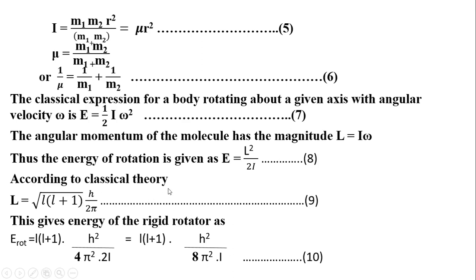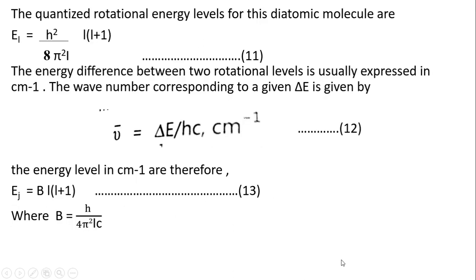According to classical theory, rotation of any frequency may be absorbed by a molecule with a permanent dipole moment, since there is no restriction on the rotational frequency of the molecule. But quantum theory requires that a molecule may only possess angular momentum given by L = √(L(L+1)) · (h / 2π), equation number 9, where h is Planck's constant. This gives the energy of the rigid rotator as E_rot = L(L+1) · h² / (8π²·I), equation number 10.